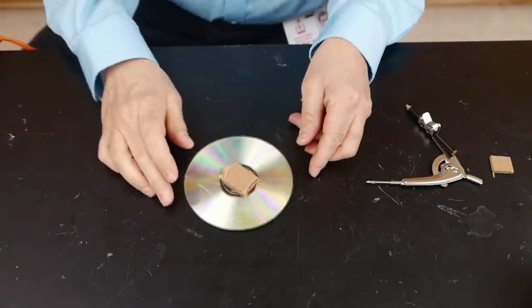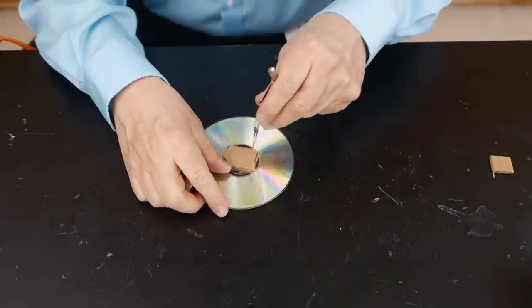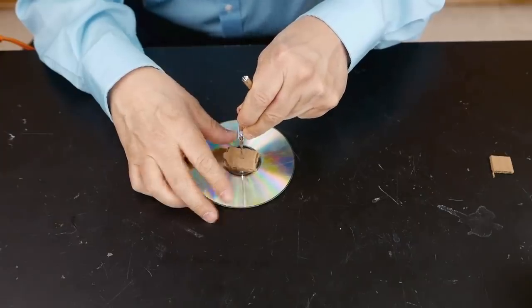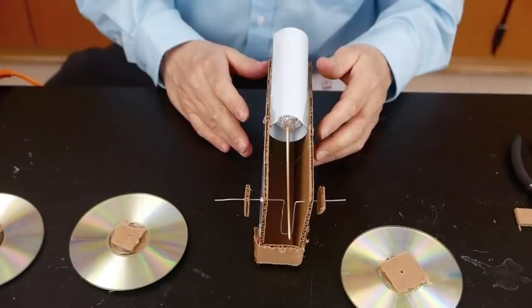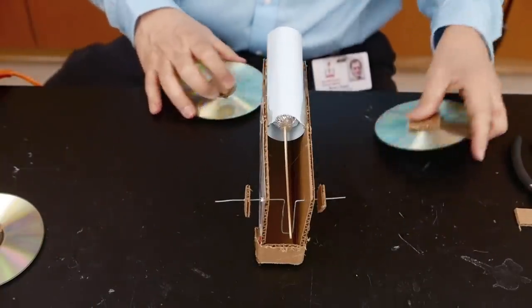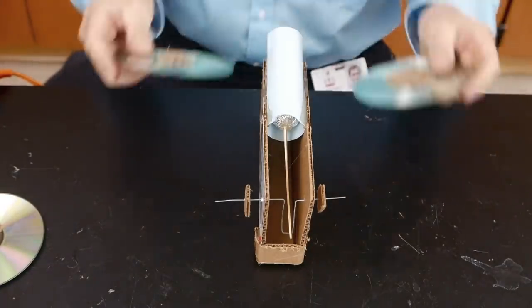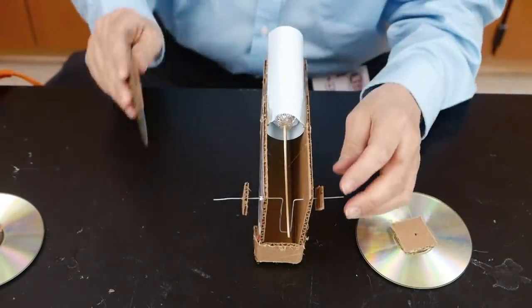My flywheels are CDs that have cardboard glued to either side and I'm simply going to use something to poke a small hole through the center of the CDs. I'm going to start with two small pieces of cardboard in between the base and the CDs. That's going to keep them from rubbing.